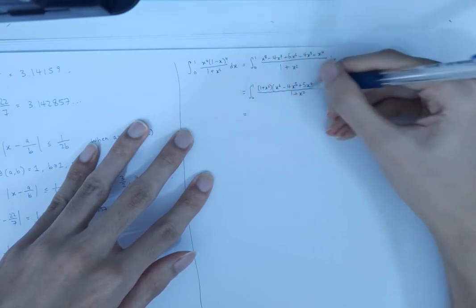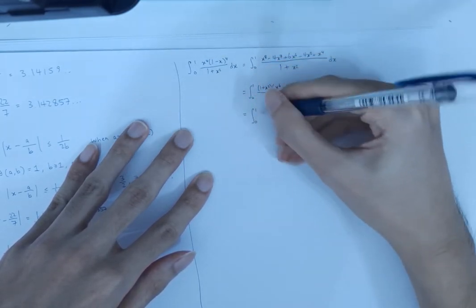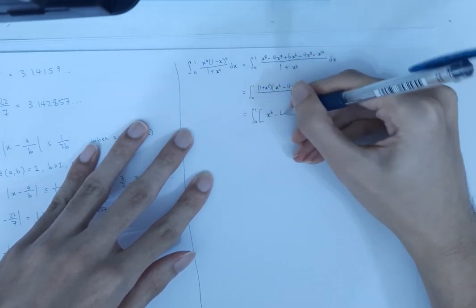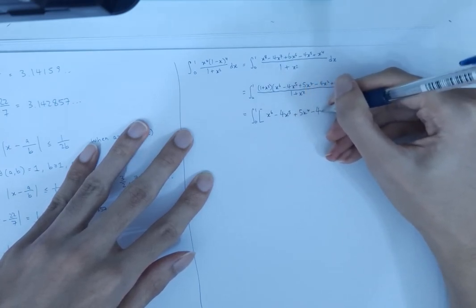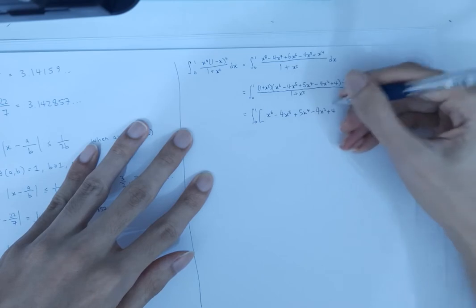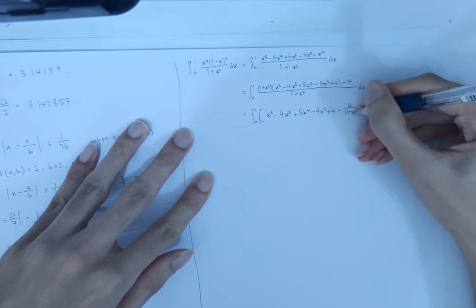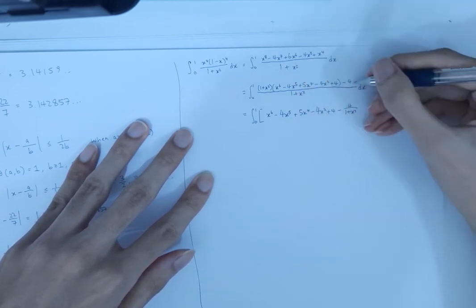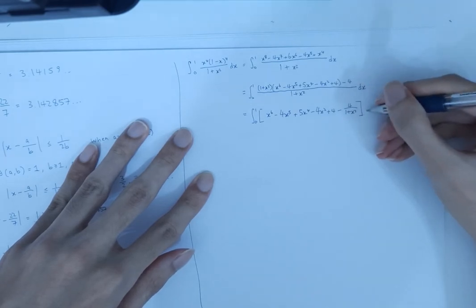And we remove, we cancel all the 1 plus x squared. x power 6 minus 4x power 5, 5x power 4, minus 4x squared plus 4, and minus 4 over 1 plus x squared. This thing is still within the, it's still a fraction since it doesn't have a 1 plus x squared in the numerator in this part dx.